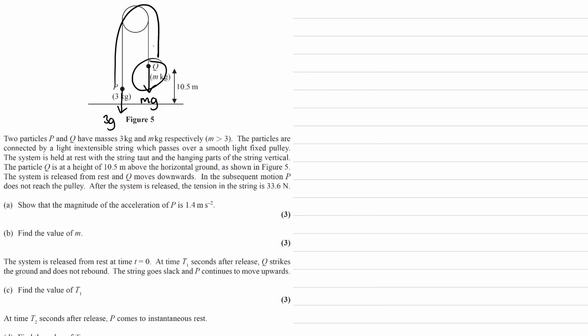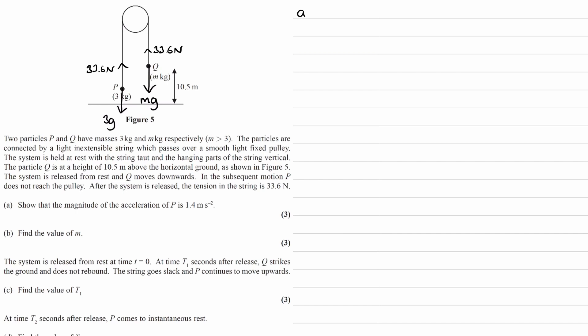We expect the whole thing to go around this way. We're told the tension in the string, and just before that, we're told that when P goes up, it does not reach the pulley. So let's draw the tension on as well — tension is 33.6 Newtons. We're trying to show for part A that the magnitude of the acceleration of P is 1.4 meters per second squared. So if you look at the forces on P, let's draw on the acceleration. Q is going to go downwards, P will go upwards — that's the direction in which P will accelerate, and Q accelerates downwards.